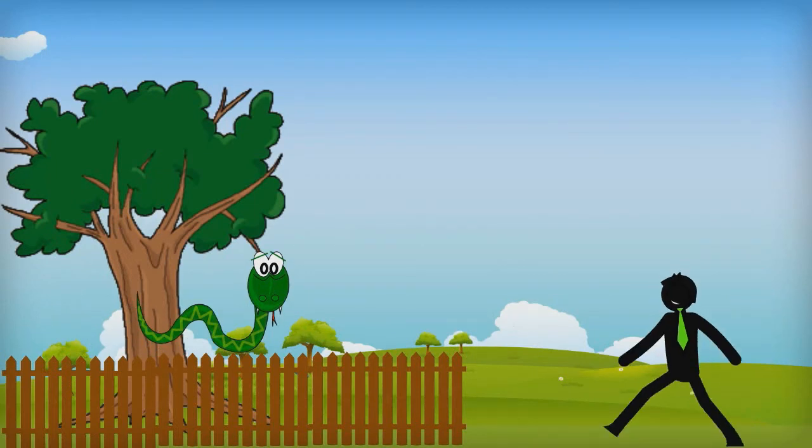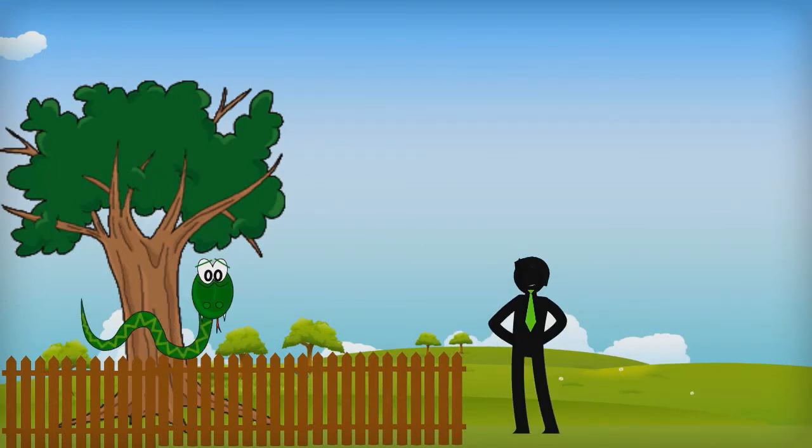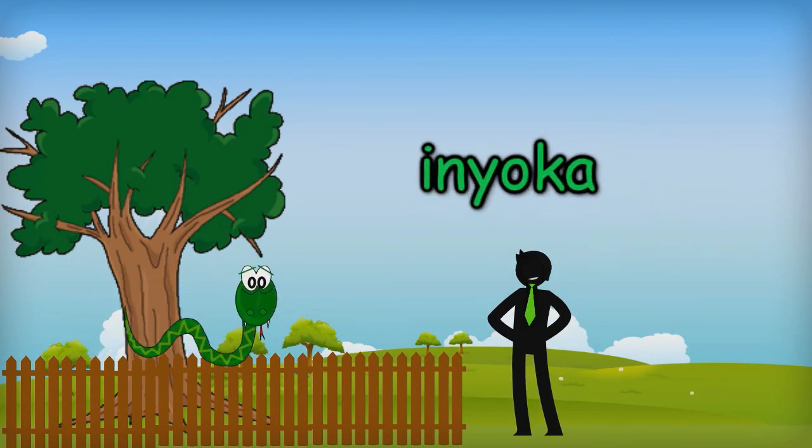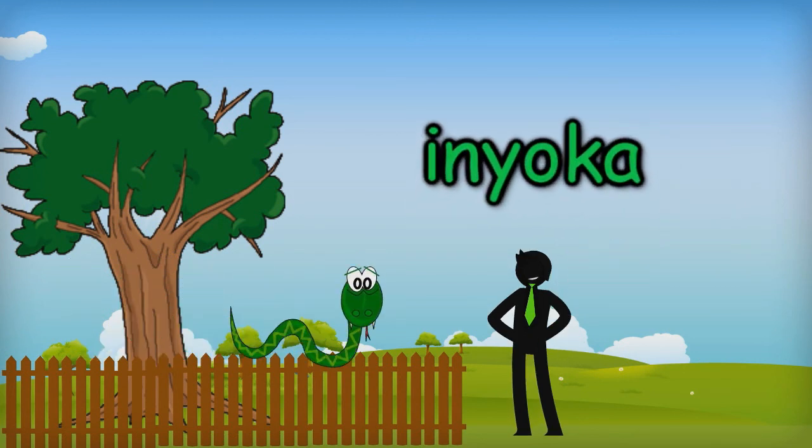Now what is the word for snake in Isikosa? Inyoka. Inyoka. That's right, Inyoka.